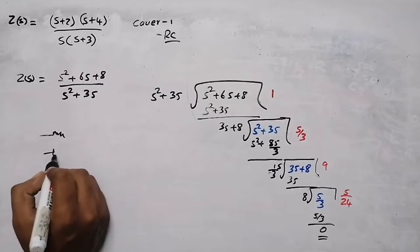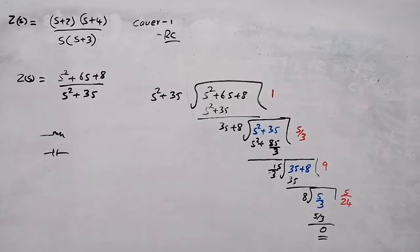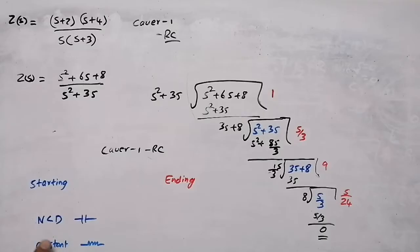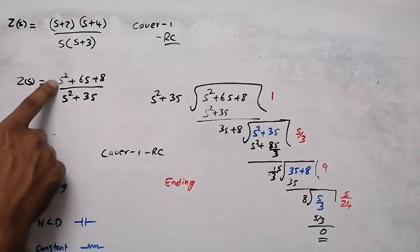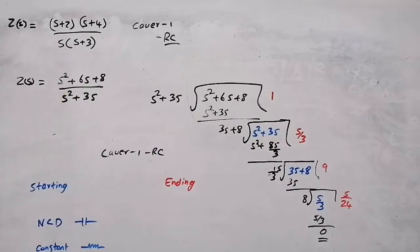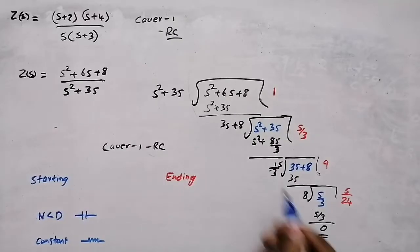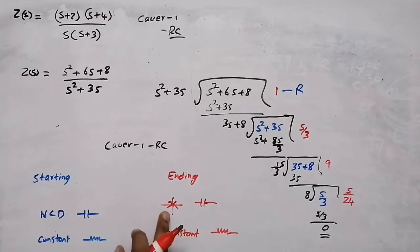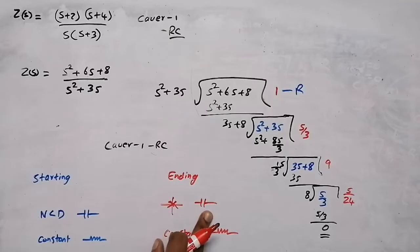This is an RC circuit, so it can start with either a resistor or a capacitor. To find the starting element, check the degree of the numerator and denominator. If the degree of the numerator is less than the degree of the denominator, the circuit starts with a capacitor. If the degrees are equal, it starts with a resistor. Here both degrees are 2, so the circuit starts with a resistor. For the ending element, if there is a pole at origin, the ending element is a capacitor; if not, it is a resistor.